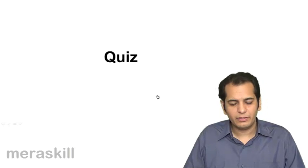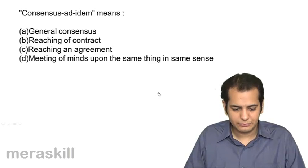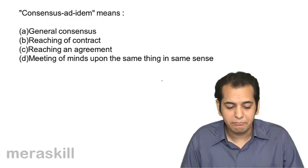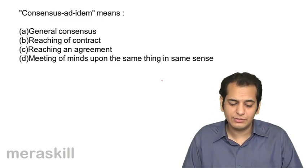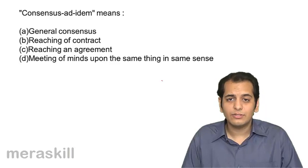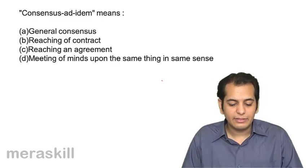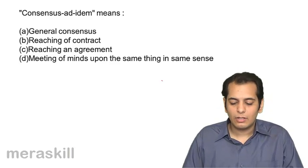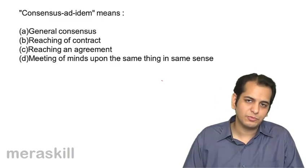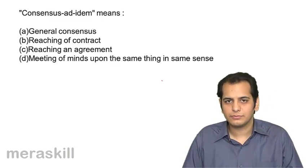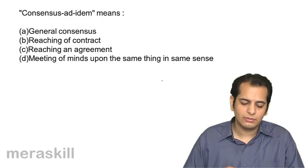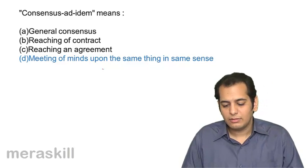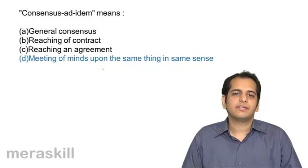Let's take a quiz on this topic. First, consensus ad idem means: A general consensus, B reaching of contract, C reaching of an agreement, D meeting of minds upon the same thing in the same sense. The answer is: meeting of minds about the same thing in the same sense.